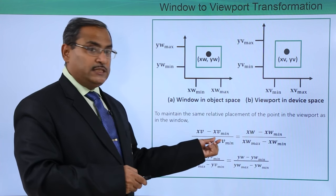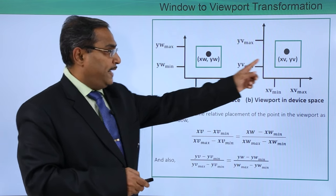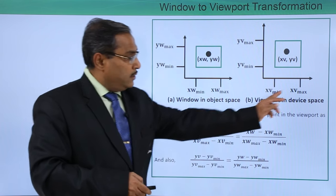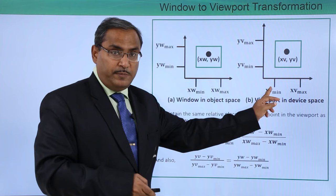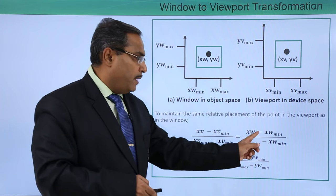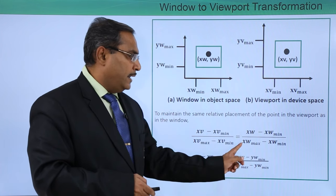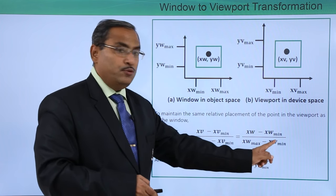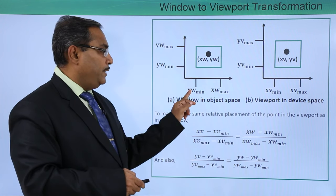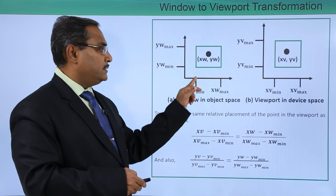XV minus XV min, this is our XV minus XV min, XV max minus XV min. This ratio will be same as XW minus XW min and XW max minus XW min. That is our XW minus XW min and XW max minus XW min.